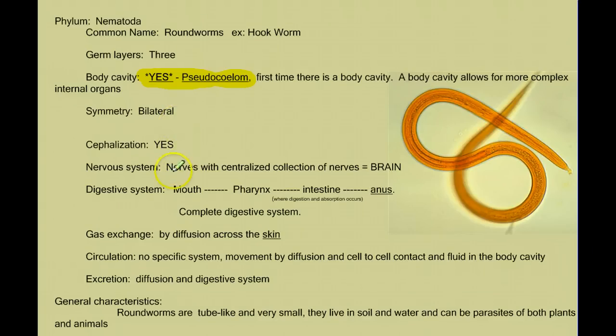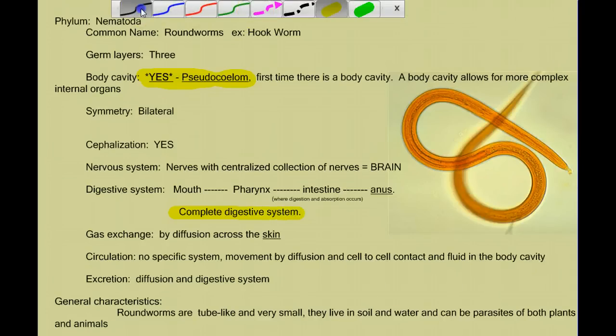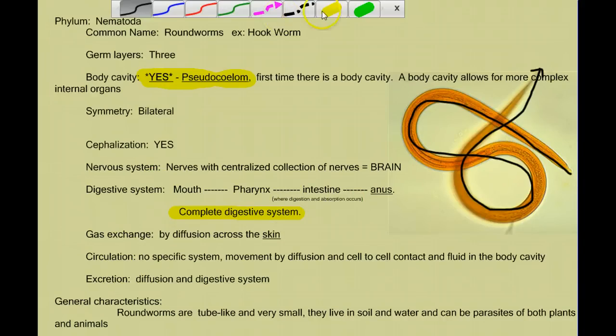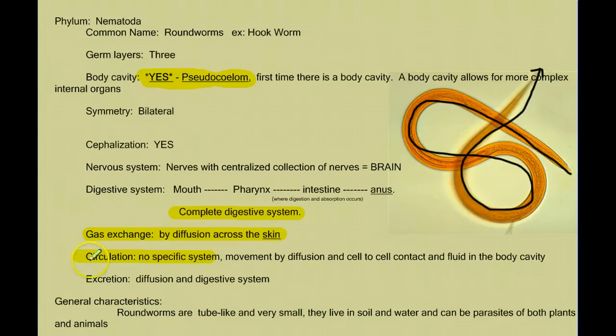And while it's not a true coelomate, there is space for more complex internal organs. The other big major advancement that we see stepping forward here is that we have our first complete digestive system. So that when food comes into this animal in the front, it travels the whole way through, and there is an exit. So we have one-way traffic. We have a complete digestive system for the first time. We still do not have a circulatory system, and we do not have any gas exchange system. All that still occurs by diffusion. But we have made some very significant evolutionary steps.